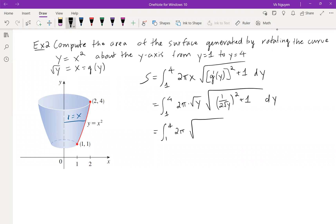From 1 to 4, 2 pi, multiply the 2 square root together, we have integral 1 to 4, 2 pi root of 1 over 4y plus y dy. We can factor out, so we have integral 1 to 4, 2 pi root of 1 plus 4y over 4 dy, which is pi integral 1 to 4 root of 4y plus 1 dy.